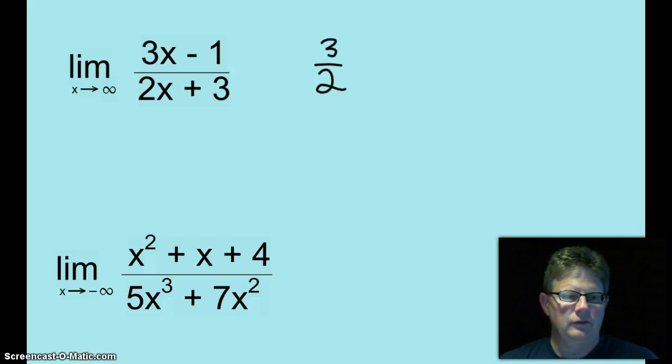The limit as x approaches negative infinity of that rational expression. Degree of denominator is more than the degree of the numerator. What does that mean with horizontal asymptotes? That is correct. The limit will be 0.